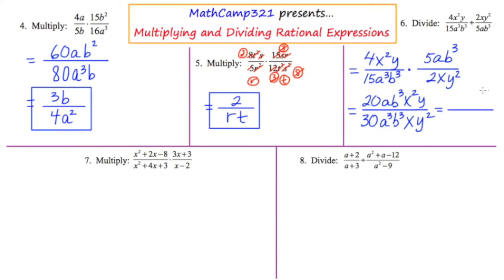We'll be done in just one step. 20 over 30 reduces to 2 thirds. A over a cubed leaves an a squared in the denominator. b cubed over b cubed cancels completely. x squared over x leaves an x in the numerator. And y over y squared leaves a y in the denominator. So the final answer is 2x over 3a squared y.